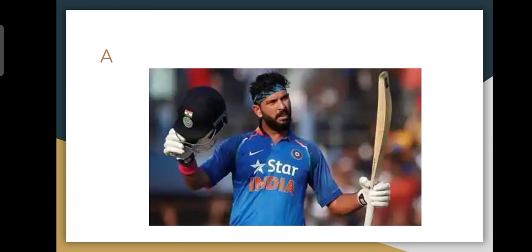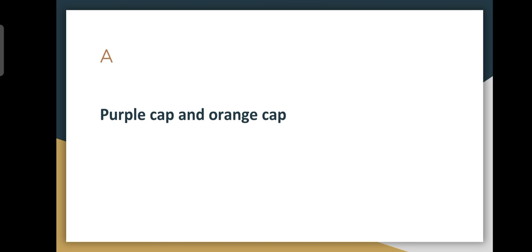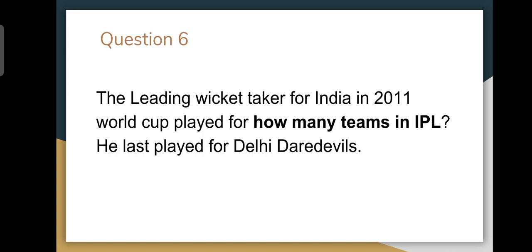Moving on to question number five — Kochi Tuskers had a particular scheme for their jersey colors. According to the team owner, what did the jersey colors denote? We were looking for two colors and what they represent. The two colors were orange and purple, and they denoted the Purple Cap and the Orange Cap. If you knew that Kochi Tuskers used the orange and purple color scheme, the answer would come to mind in the context of IPL. The colors being purple and orange represent the Purple Cap and Orange Cap.